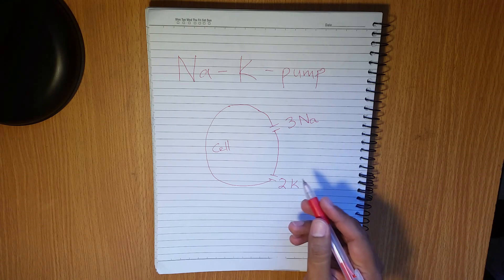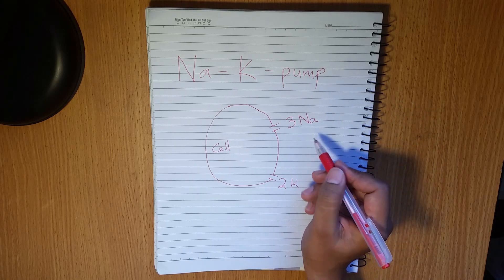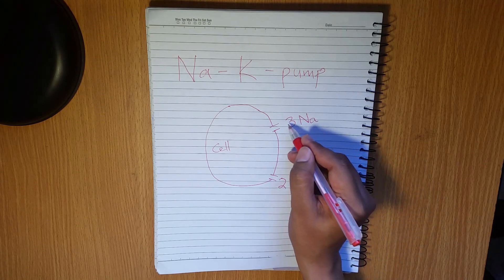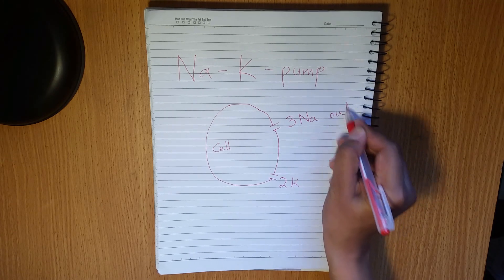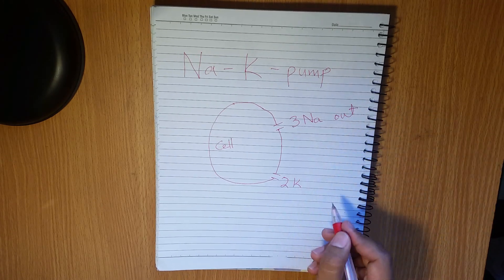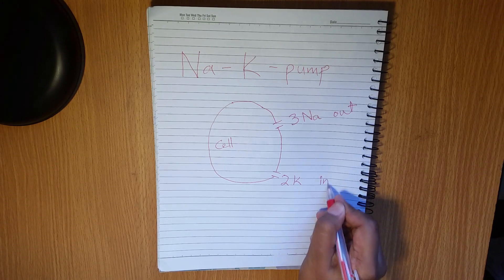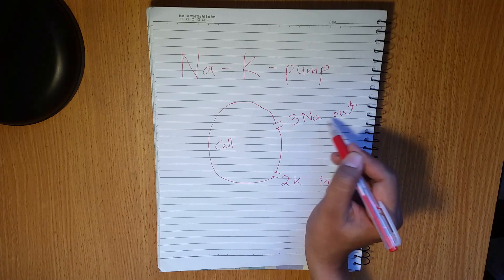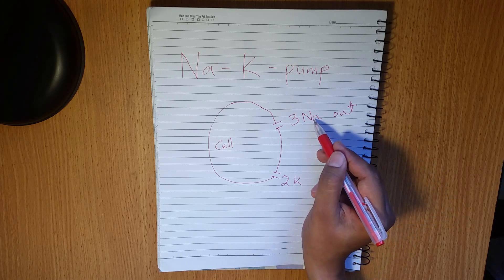So here I made a formula so that you can easily remember how many sodium moves out of the cell and how many potassium moves into the cell. Three sodium moves out and two potassium moves into the cell. You can remember easily: three sodium moves out — three is bigger than two, and sodium is denoted by Na.